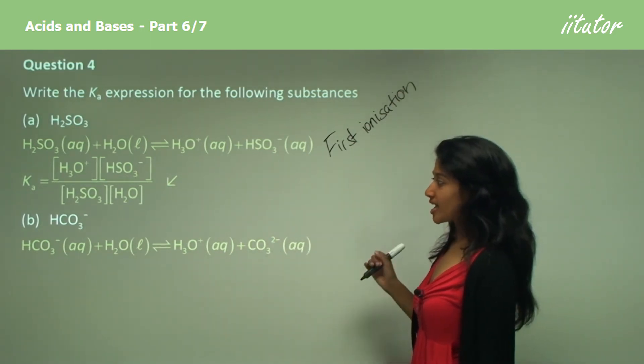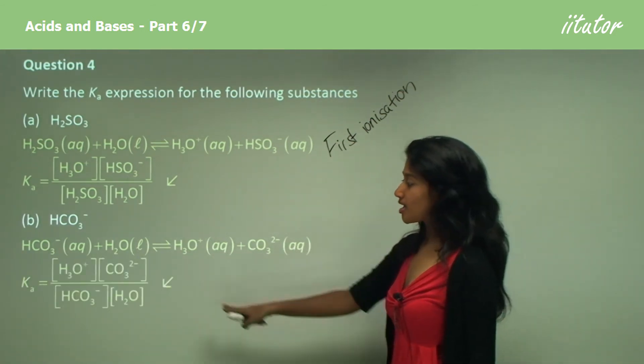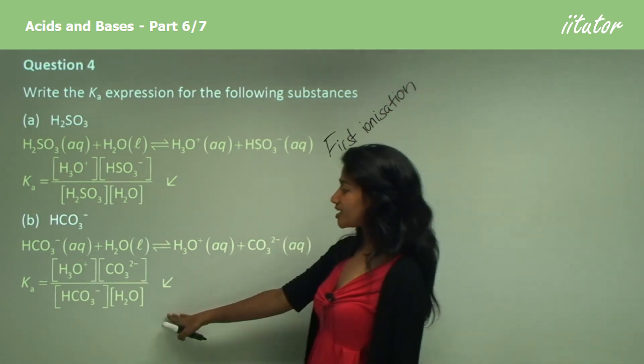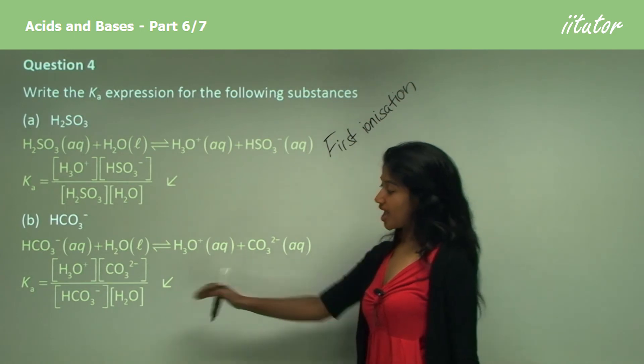So to write the K expression, we would first multiply the concentration of the products, as you can see, and divide it by the multiplication of the concentration of the reactants, as you can see.